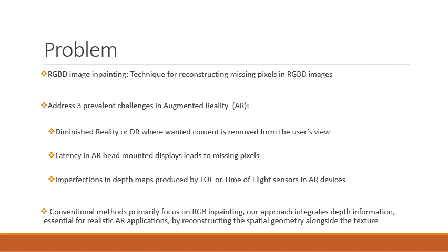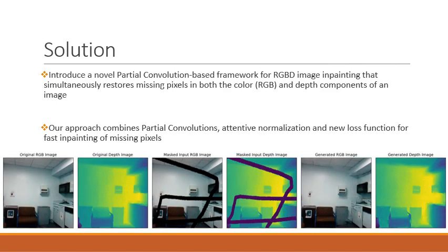Presently most approaches focus on either RGB inpainting or depth inpainting separately, whereas our approach combines these two tasks into one, reconstructing both spatial geometry alongside texture. We present a novel partial convolution-based model that combines partial convolution with attentive normalization and a new updated loss function for efficient RGB and depth inpainting. Our results indicate the effectiveness of our approach.